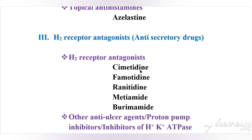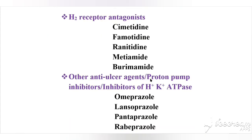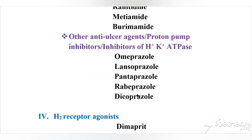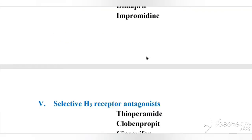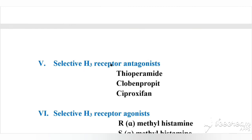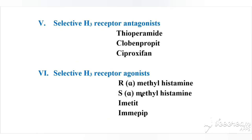The third type is H2 receptor antagonists, otherwise called antisecretory drugs. Examples are cimetidine, famotidine, ranitidine, metiamide, and burimamide. Other anti-ulcer agents or proton pump inhibitors (inhibitors of H+/K+ ATPase) include omeprazole, lansoprazole, pantoprazole, rabeprazole, and esomeprazole. The fourth type is H2 receptor agonists, examples dimaprit and impromidine. The fifth is selective H3 receptor antagonists, examples thioperamide, clobenpropit, and ciproxifan. The sixth is selective H3 receptor agonists, examples R-alpha-methylhistamine, imetit, and immepip. That concludes the classification of antihistamines.